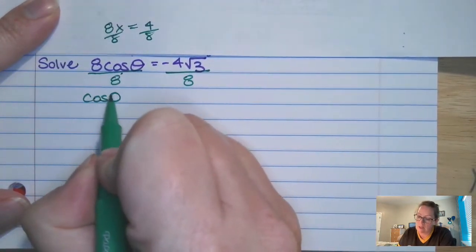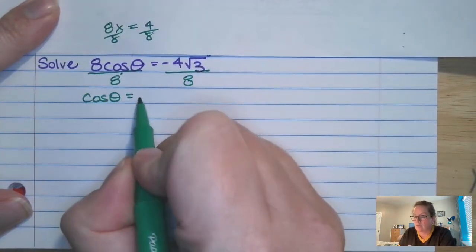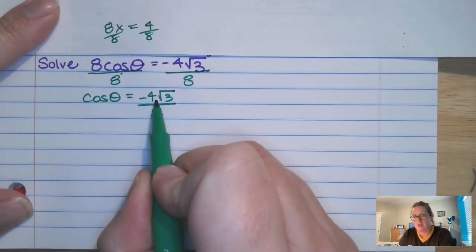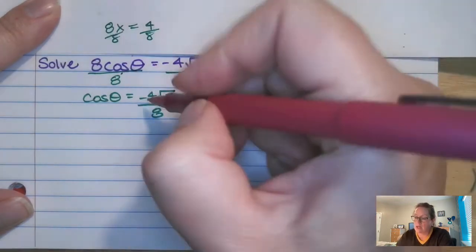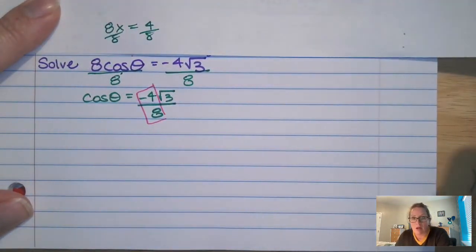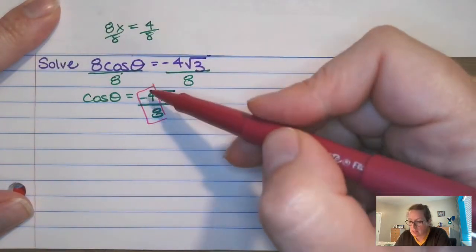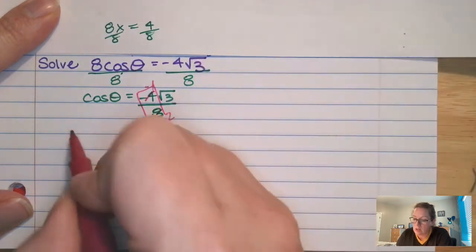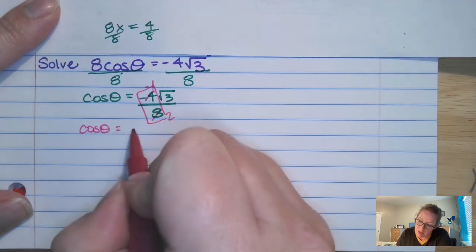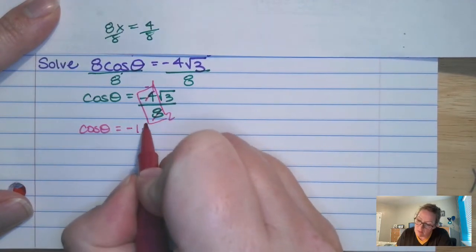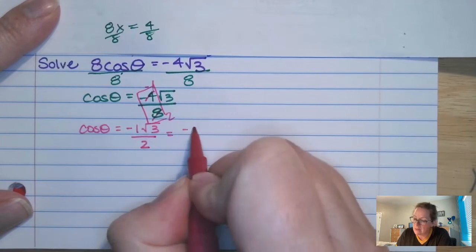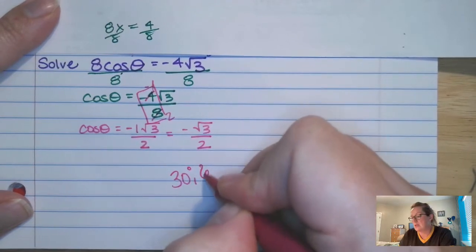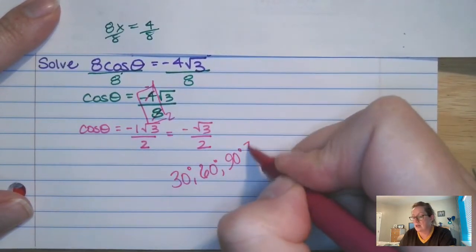So we get cos theta equals negative 4 root 3 over 8. There's no plus or minus in between these two things, so we can cancel this guy out. So if you're looking at the whole numbers there, they cancel out. So negative 4 and 8, that would be negative 1 and 2. So we want to figure out cosine theta, where does it equal negative root 3 over 2? Negative root 3 and 2, you should be thinking 30, 60, 90. Are you thinking that? Because you should be.